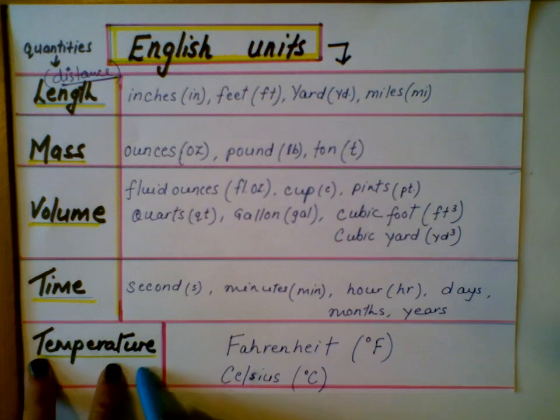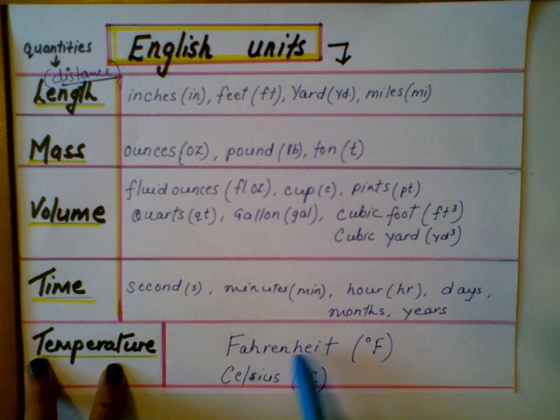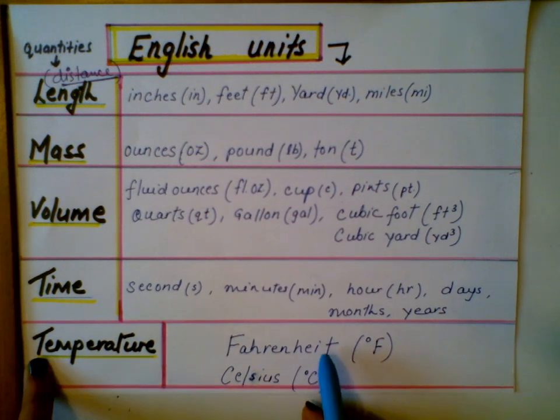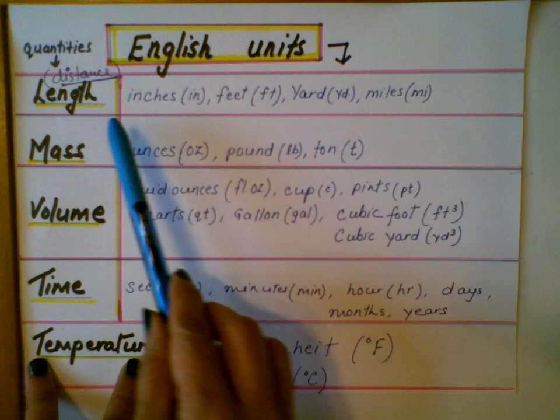Last one is temperature. The English unit for measuring temperature is degrees Fahrenheit. But hospitals and science labs use Celsius scales. You notice that in the English system, we have several units for one quantity.